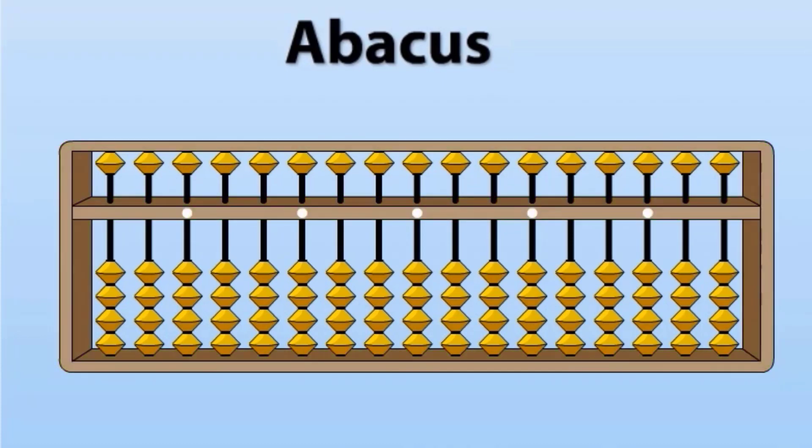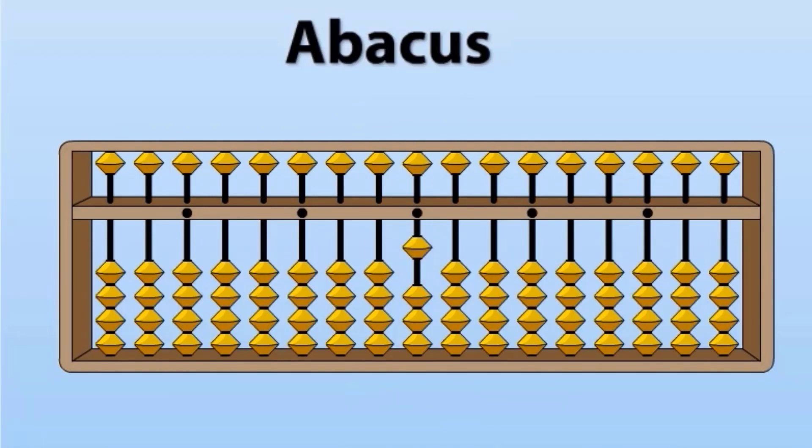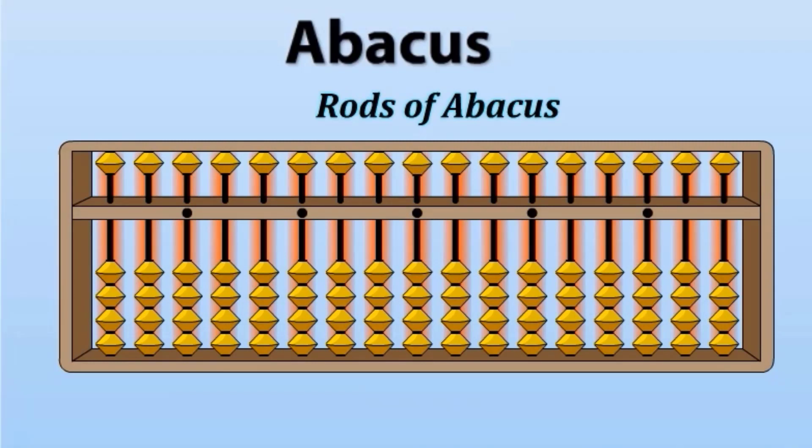This is Abacus tool. This is the frame of Abacus. This bar is known as value bar. Whenever a bead touches the value bar, it attains some value. These are upper beads. Each upper bead has value 5. These are lower beads. Each bead has value 1. These are rods of Abacus.